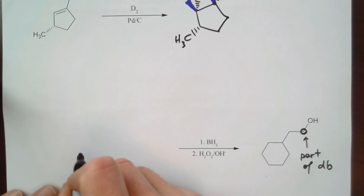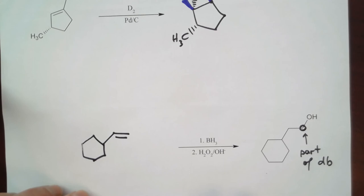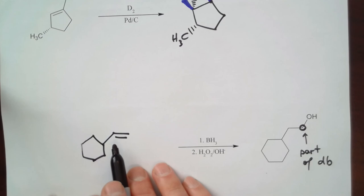So let's draw the carbon backbone with the double bond. So notice that with this hydroboration reaction I'm going to add the oxygen, the OH, to this carbon and I'm going to add the hydrogen to this carbon, which gives me the product. So this is the alkene that reacted to give me this product.